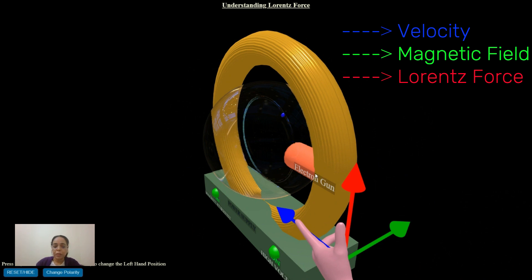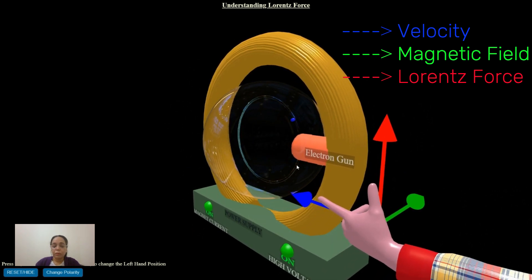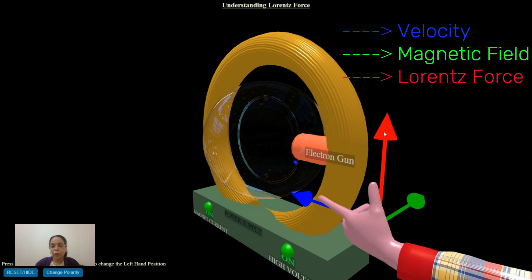We use left hand for an electron. If you have a positive ion, or a positron, or a positive charge, then the direction of the force will be opposite to it. You can use the right hand to represent that.